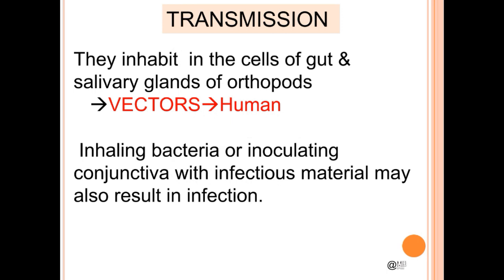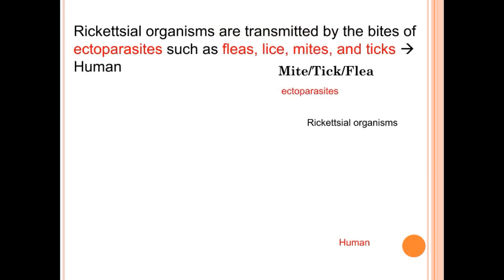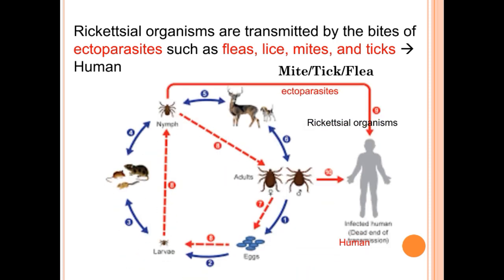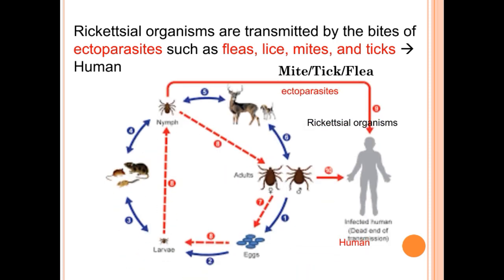Mode of transmission: they inhabit the cells of the gut and salivary glands of arthropods, which act as vectors and are then transmitted to human beings. Alternatively, inhaling bacteria or inoculating the conjunctiva with infectious material may also result in infection. Rickettsial organisms are transmitted by the bite of ectoparasites such as fleas, lice, mites and ticks to the human being.